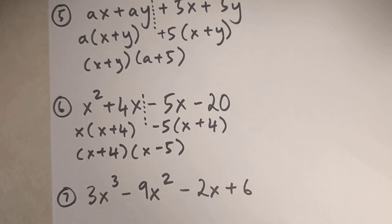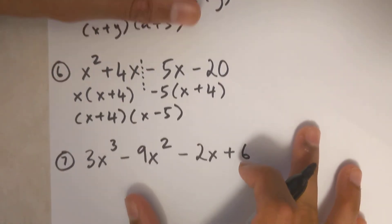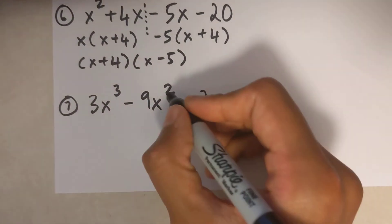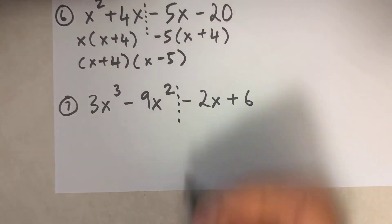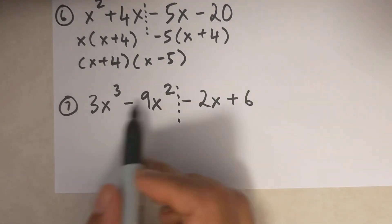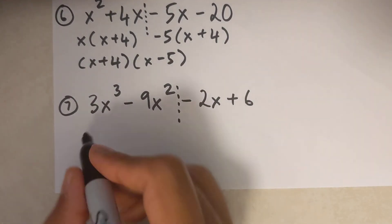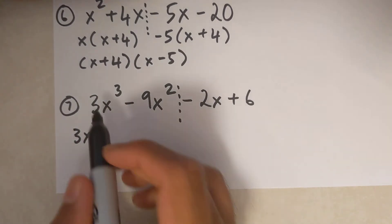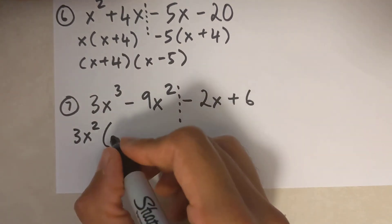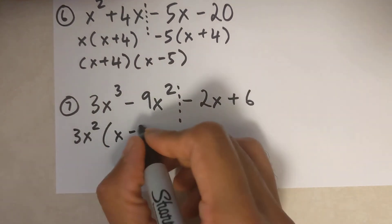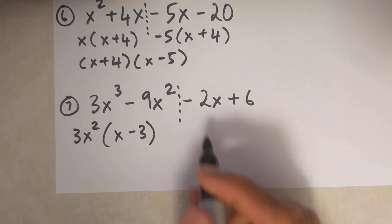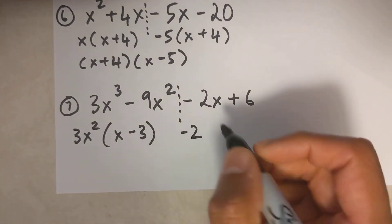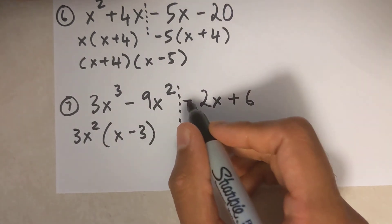Let's try the final one. Start with my dotted line. The common factor in the first group is 3x squared, and I'm left with x minus 3. The common factor over here is negative 2 — you always have to take this sign as your common factor.